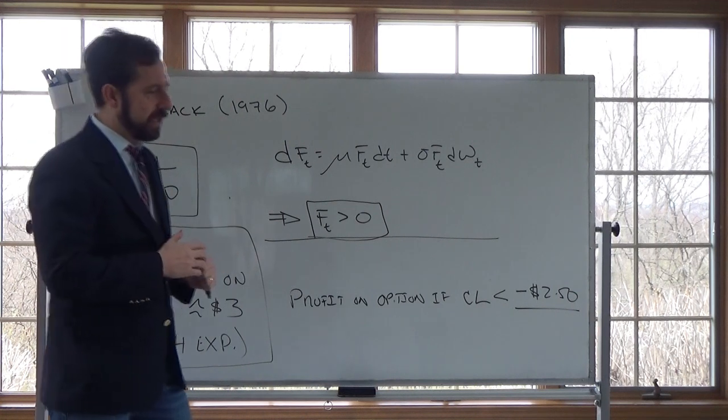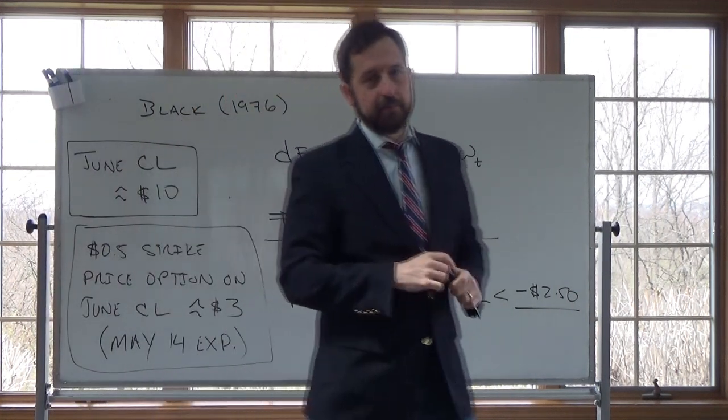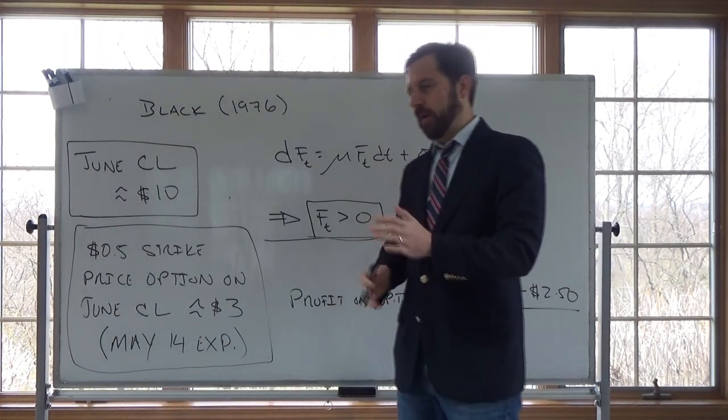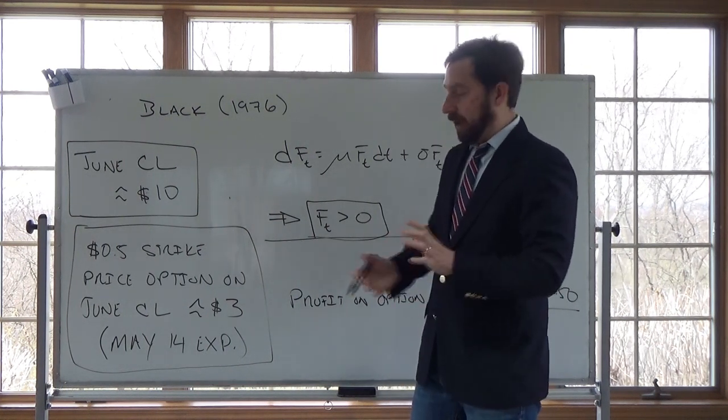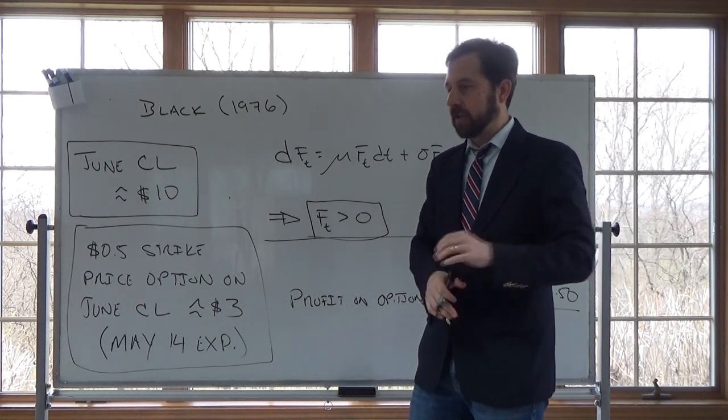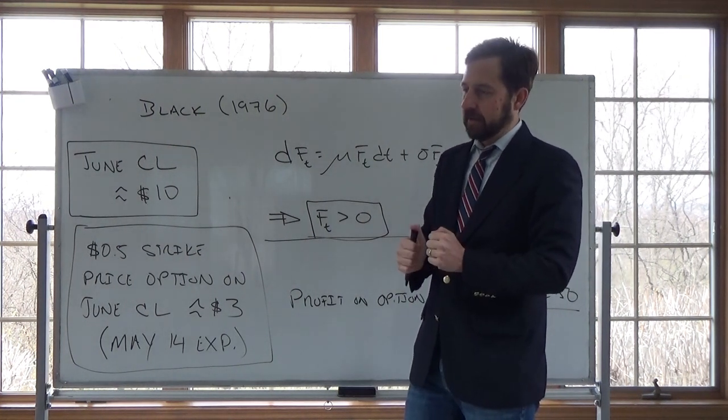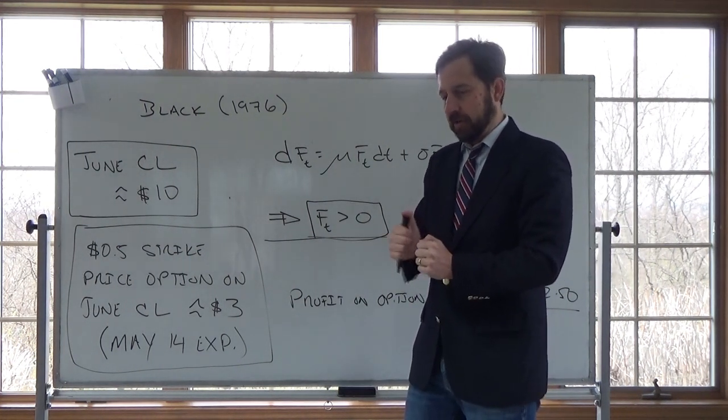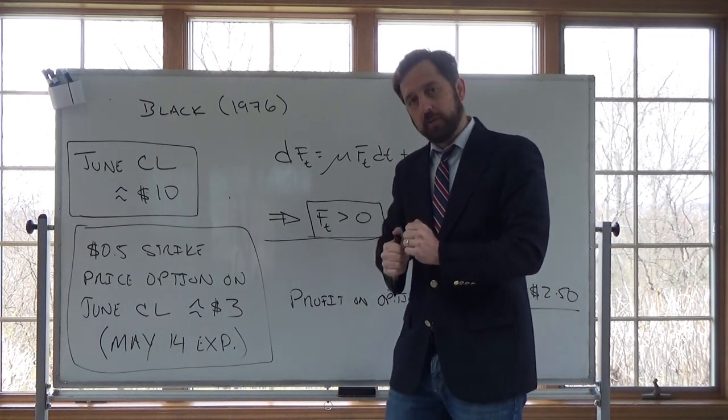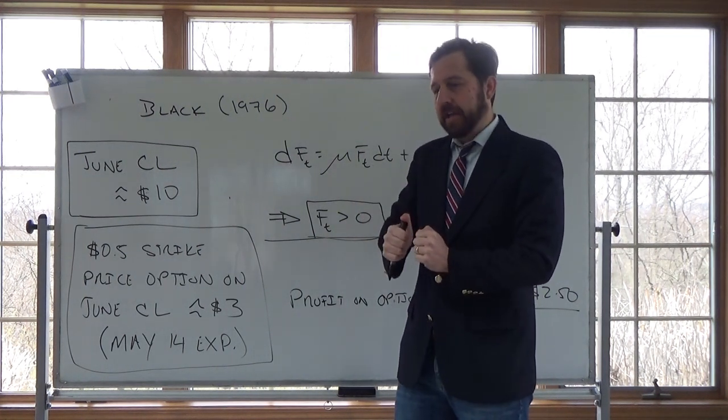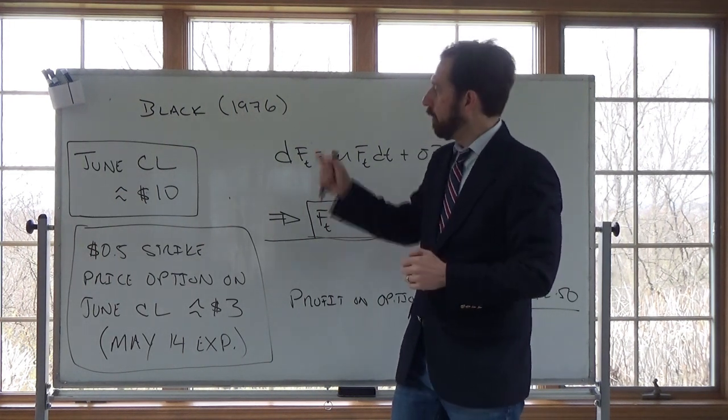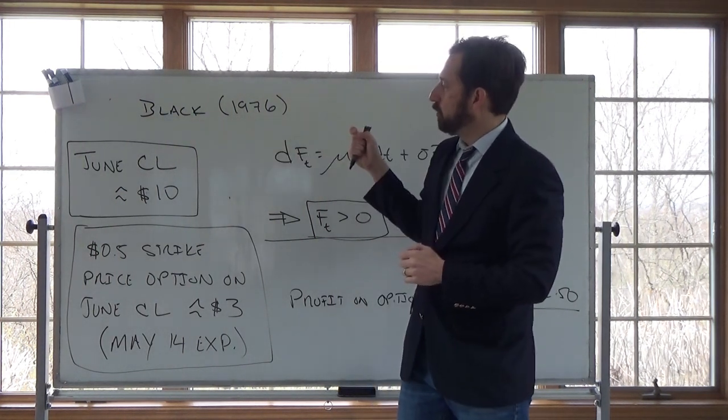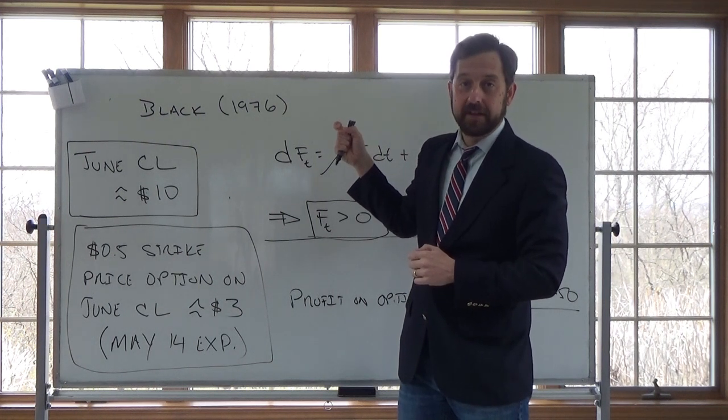But what this would be is a great project, a great analysis, if you're interested in option pricing, to go and say okay, well, if you can pull some data, particularly if you can pull some data over the last couple of days, and say as the market started to expect that this contract would go negative, how did the actual Greeks, the actual behavior of the option, diverge from the behavior of the option which would be predicted by Black 1976?